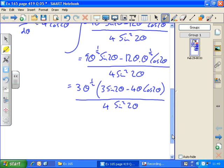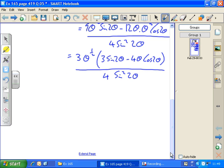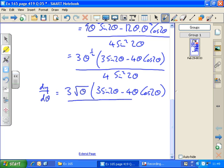And so rewriting in third form, we get dy by d theta finally equals 3, theta to the half is the square root of theta, i.e. third form, brackets 3 sine 2 theta minus 4 theta cos 2 theta all over 4 sine squared 2 theta.